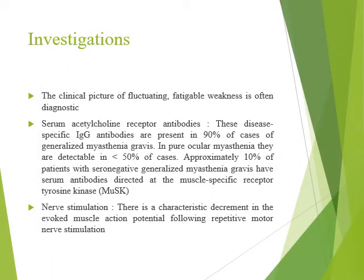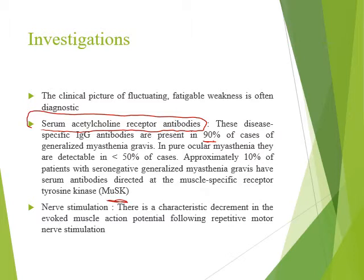For investigations, diagnosis is first clinical, then confirmed by specific tests. The most important is the acetylcholine receptor antibody — a quantitative measurement that is positive in about 90% of generalized myasthenia gravis. In ocular myasthenia, the sensitivity decreases to less than 40-50%. Approximately 10% who are antibody-negative may have anti-MuSK (muscle-specific receptor tyrosine kinase) antibody. For ocular myasthenia, we send for both anti-acetylcholine receptor antibody and anti-MuSK antibody.